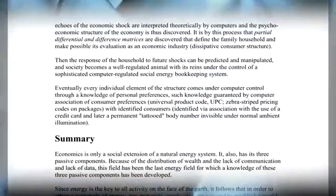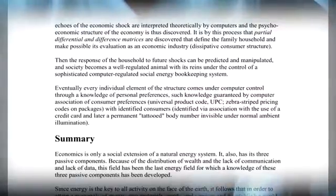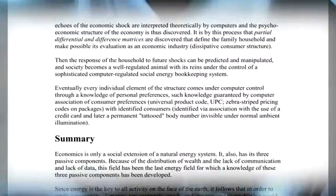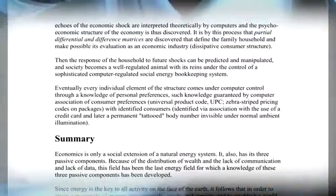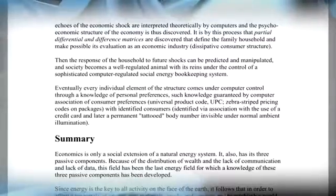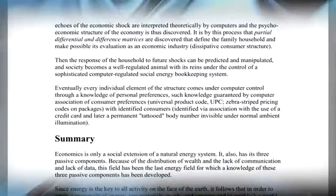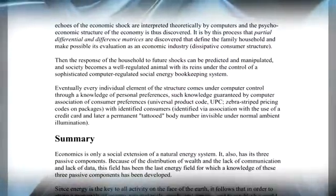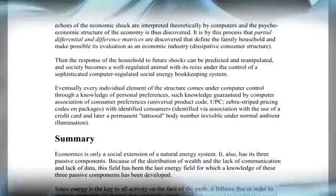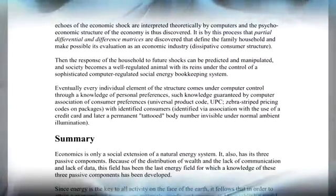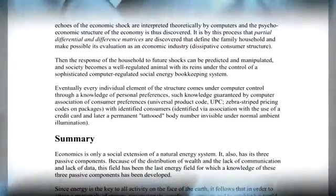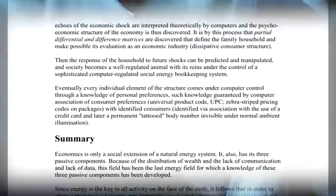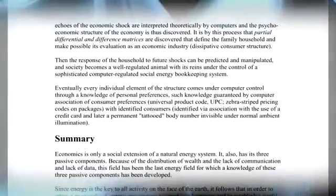Then the response of the household to future shocks can be predicted and manipulated, and society becomes a well-regulated animal with its reins under the control of a sophisticated computer-regulated social engineering bookkeeping system. Eventually, every individual element of the structure comes under computer control through a knowledge of personal preferences, such knowledge guaranteed by computer association of consumer preferences, UPC codes, zebra stripe pricing codes on packages with identified consumers, identified via association with the use of a credit card and later a permanent tattooed body number visible under normal ambient illumination.